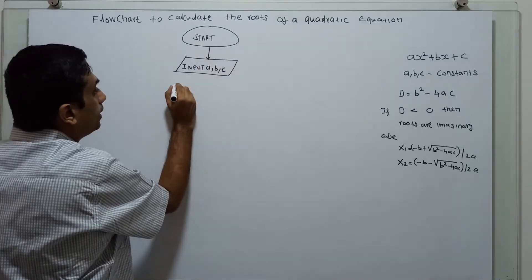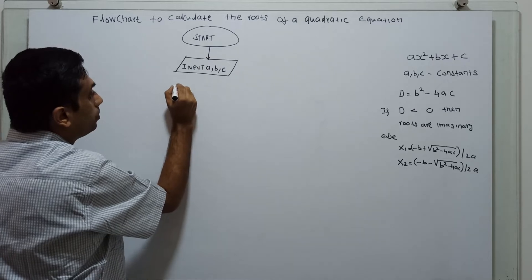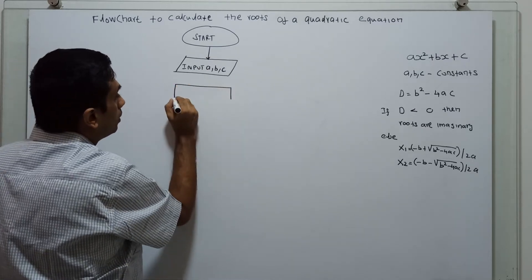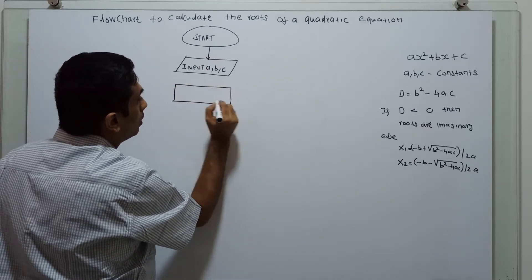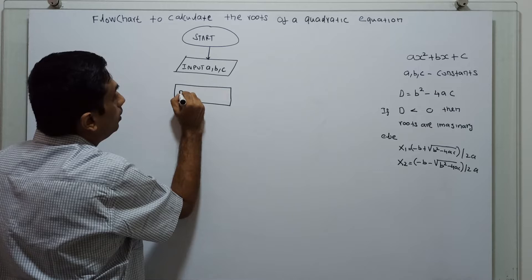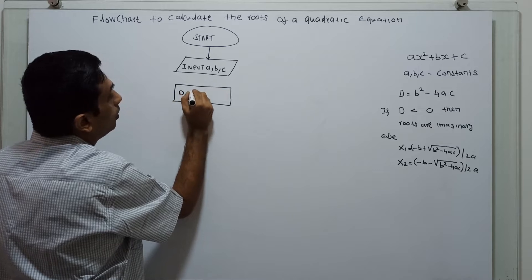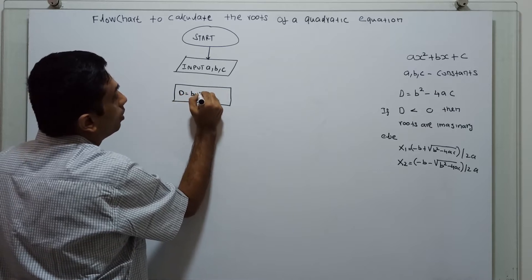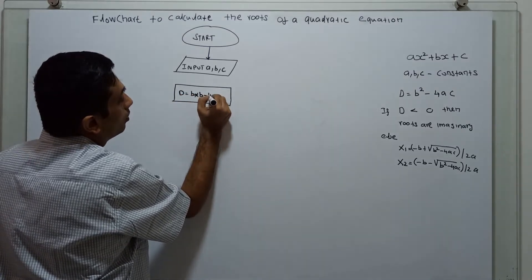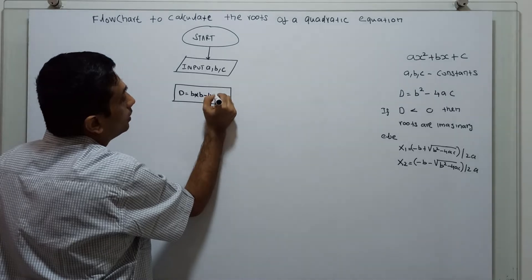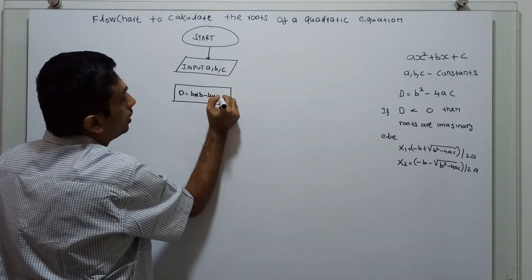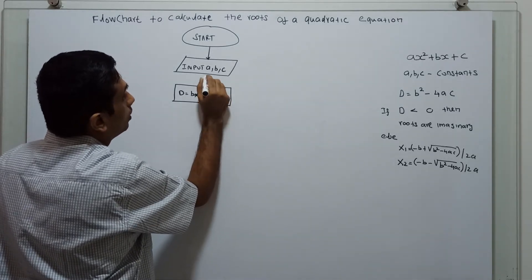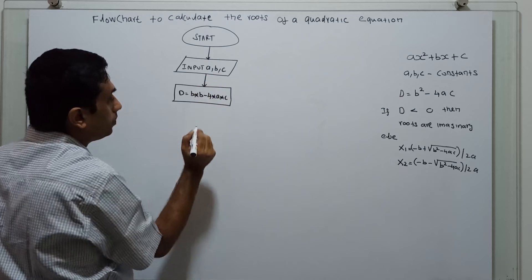Now I am calculating the discriminant: d equals b squared, that is b star b, minus 4ac, which is 4 star a star c. When the discriminant value is calculated,